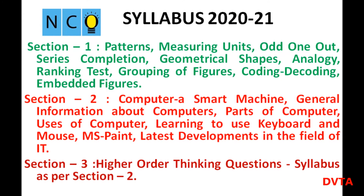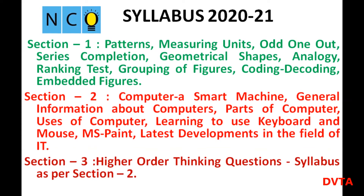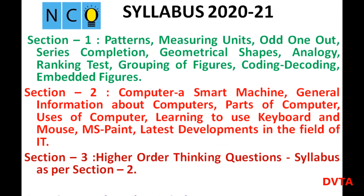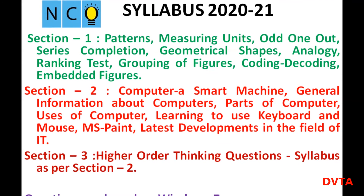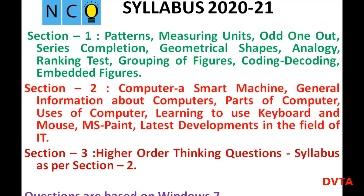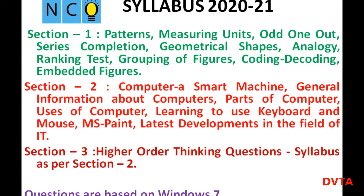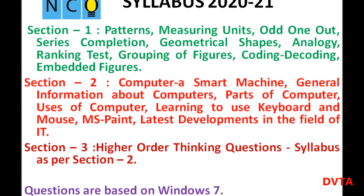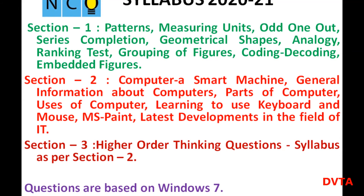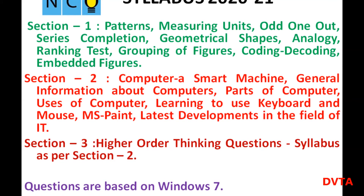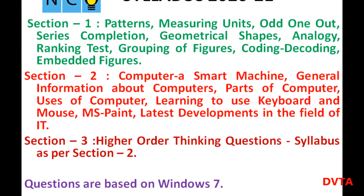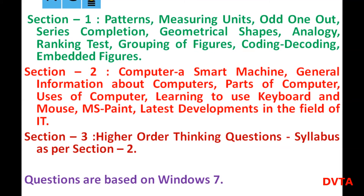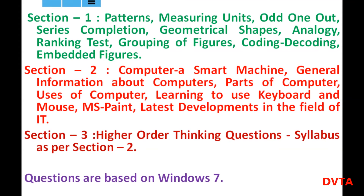Section 1: Patterns, measuring units, odd one out, series completion, geometrical shapes, analogy, ranking test, grouping of figures, coding decoding, embedded figures. Section 2: Computer — a smart machine, general information about computers, parts of computer, uses of computer, learning to use keyboard and mouse, MS Paint, latest developments in the field of IT. Section 3: Higher-order thinking questions, syllabus as per Section 2.